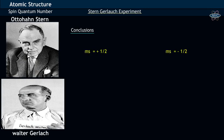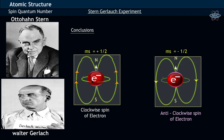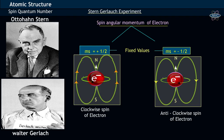The value ms equals plus half refers to the clockwise spin of electron, while anti-clockwise electron spin is referred by ms equals minus half. Since the spin angular momentum of an electron has two fixed specific values of plus half and minus half, one may conclude that the spin angular momentum of an electron is quantized.